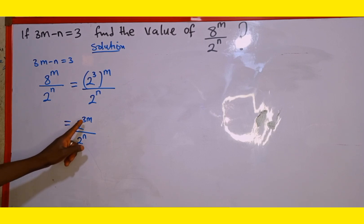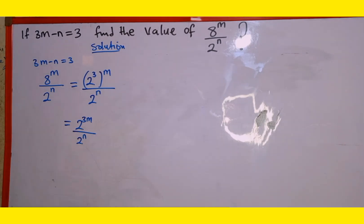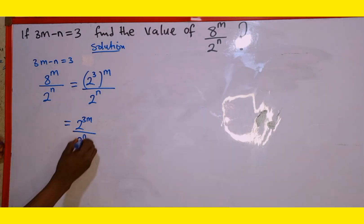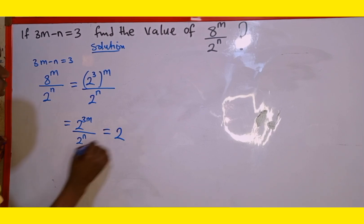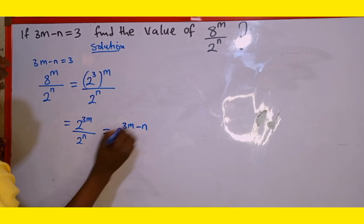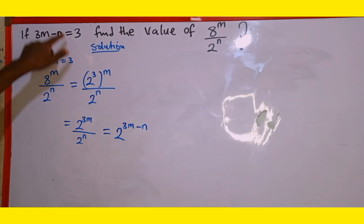Now, according to the division law of indices, the base is 2 in both the numerator and denominator — they are the same. Each base has a power: 3m in the numerator and n in the denominator. Since the bases are the same, we can write one base and subtract the powers, giving us 2 to the power of 3m minus n.